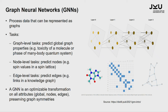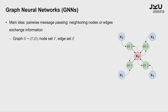In general, graph neural networks are optimizable transformations on all these attributes — the globals, the nodes, and the edges — preserving the graph symmetry. So in every layer you have this graph symmetry, and typically you do not change the connectivity in the layers.